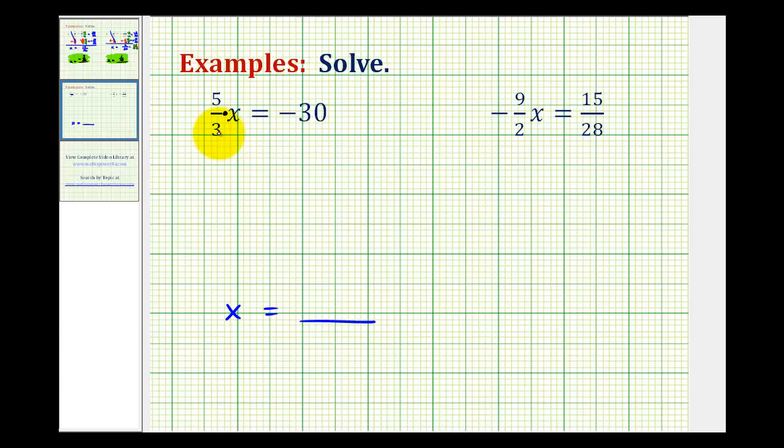In this case, in order to isolate the variable, we're going to multiply both sides of the equation by the reciprocal of five-thirds, which would be three-fifths.